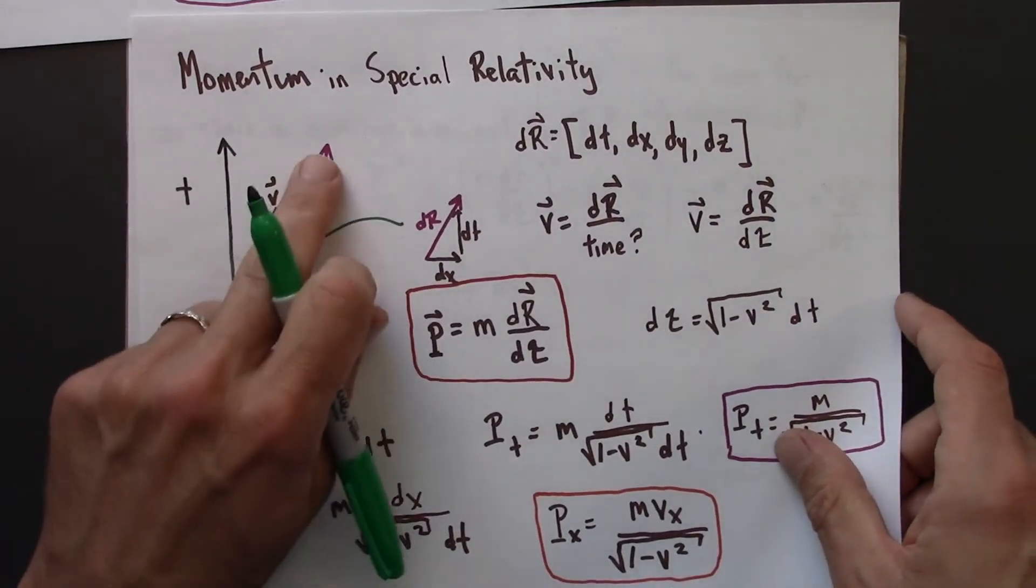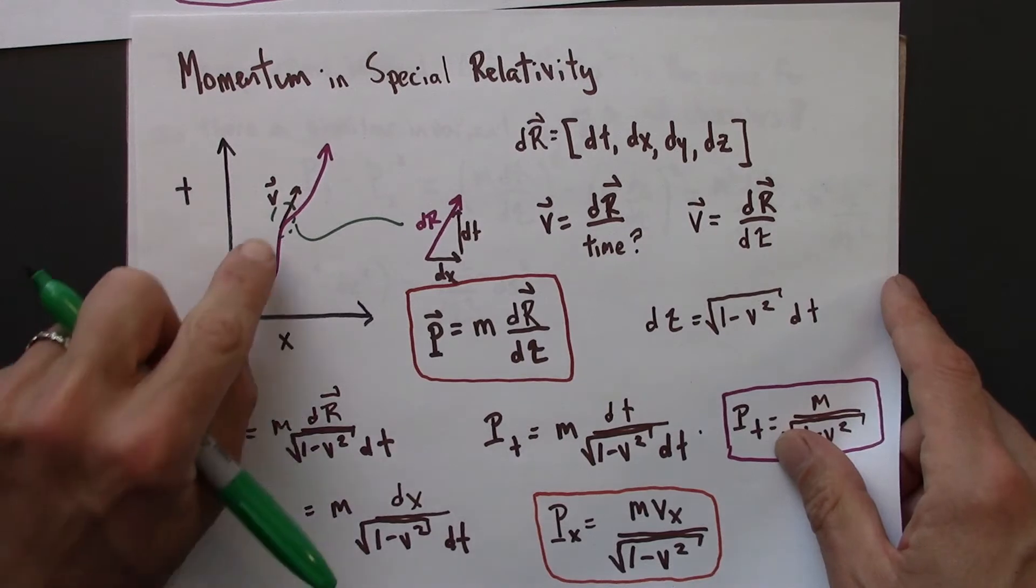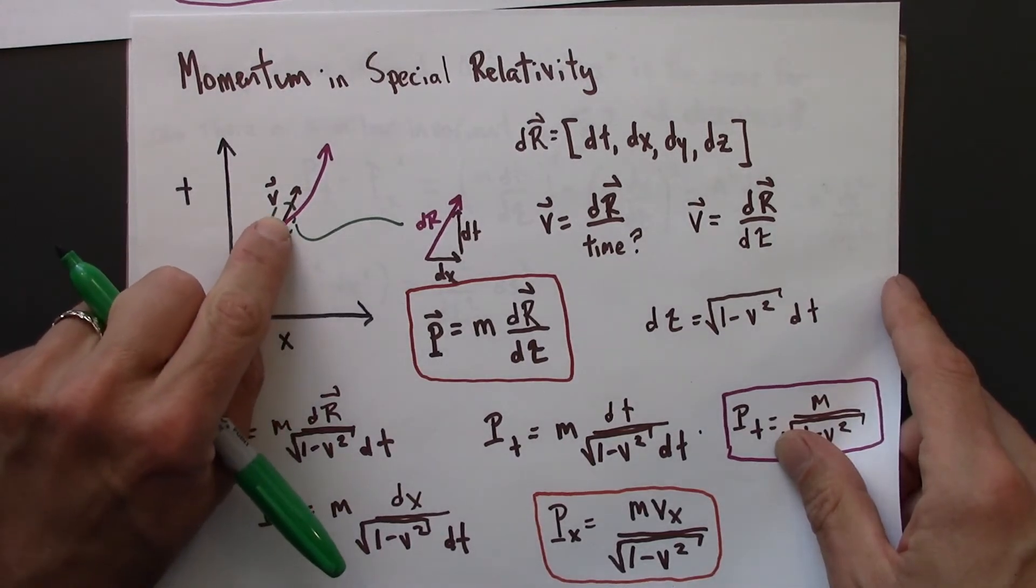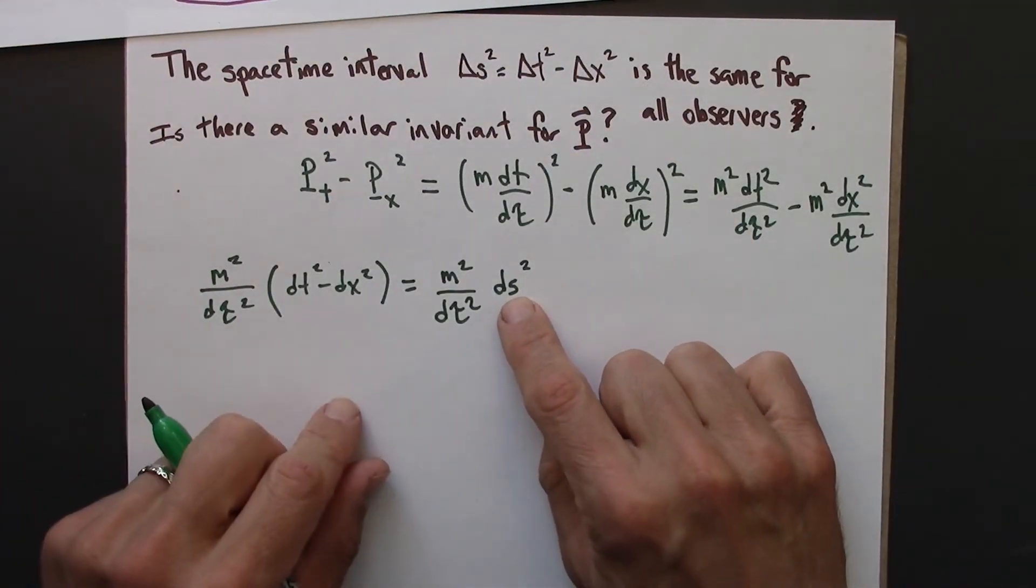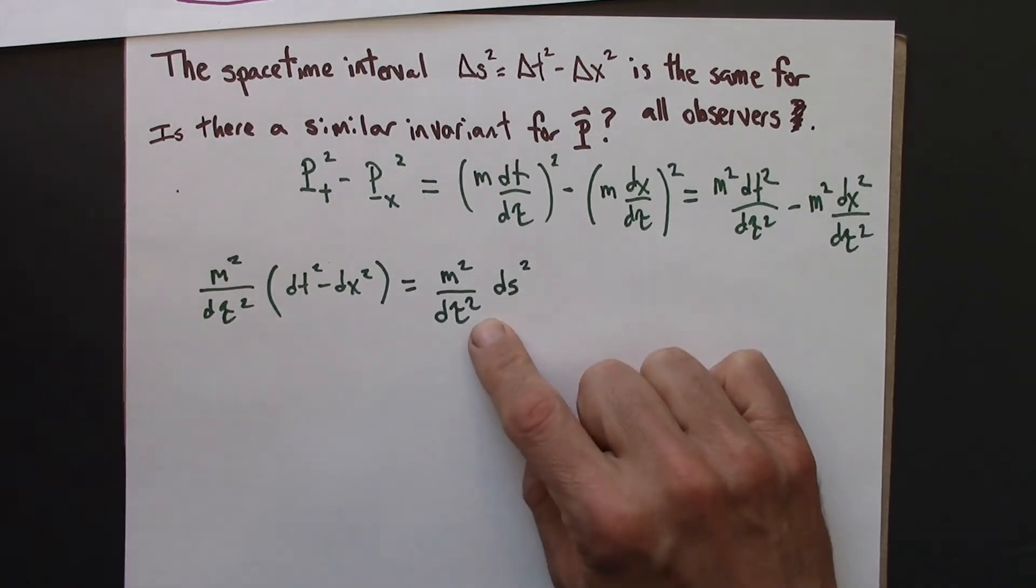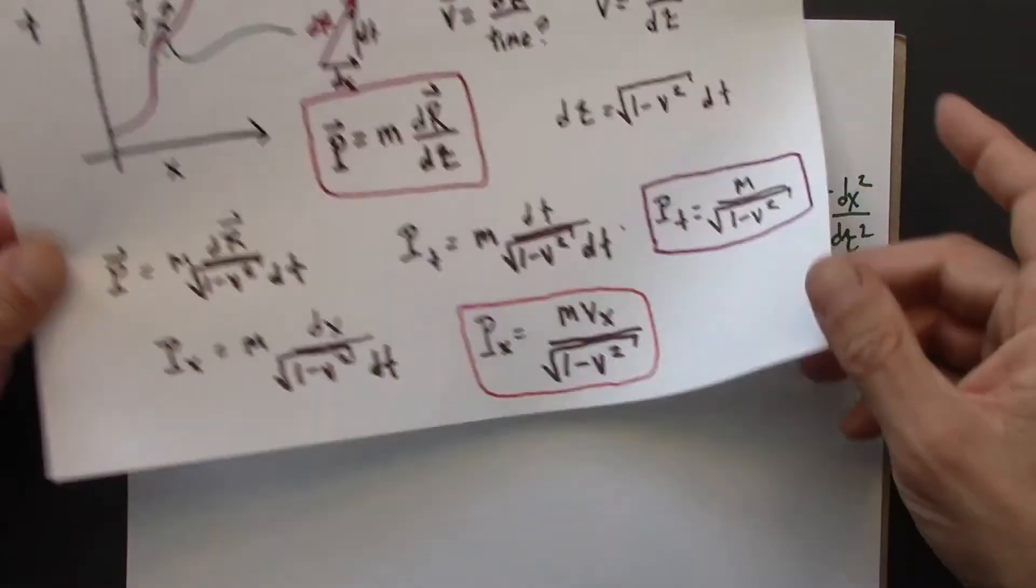because the picture is that we're considering a very, very small interval. Right, the context is we've got an object moving through spacetime, and we're considering two events along that world line that are very close together. So since these events are close together, the spacetime interval is also the proper time.